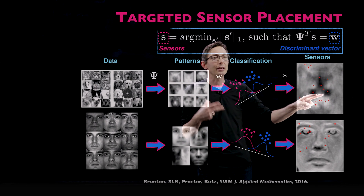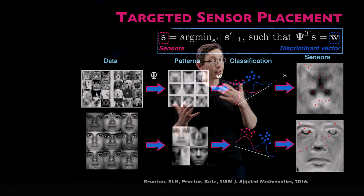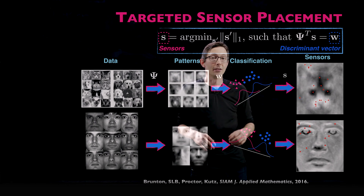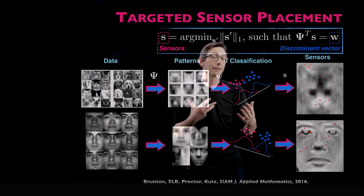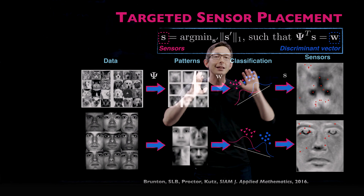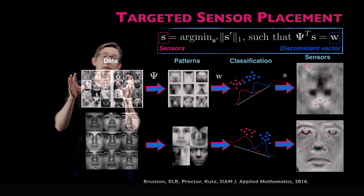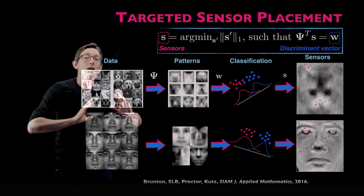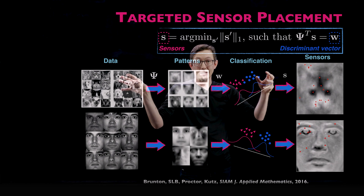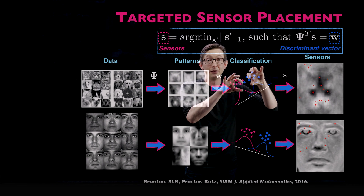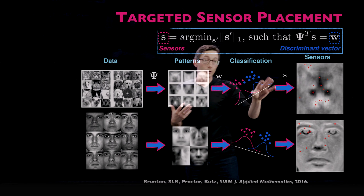The individual pixel locations in S tell you where it is best to measure for this classification task. For eigenpets and eigenfaces, these are where the red sensors fall out of the data. The sensor placements are extremely intuitive — for the cat, the sensors are in the eyes, the ears, and the snout, where cats and dogs are most different. For humans, you also get a lot of sensors in the corners of the eyes, corners of the nose — regions where there's a lot of variability and where different people look very different. We didn't tell the algorithm anything about humans or dogs or cats; we just gave it examples.